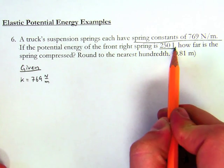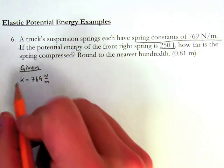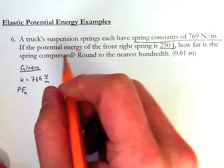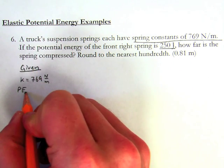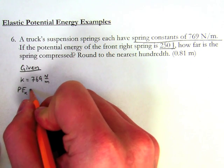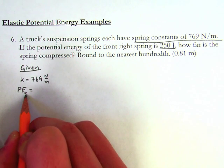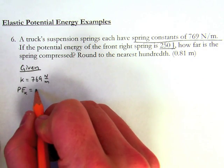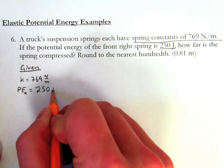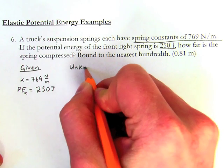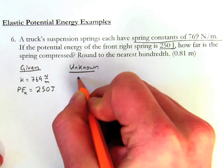So my potential energy, I'm going to use PE with subscript e here rather than writing the whole word elastic, because that's the same variable I use for the spring constant. So potential energy is 250 joules, and now my unknown is going to be how far it's compressed.